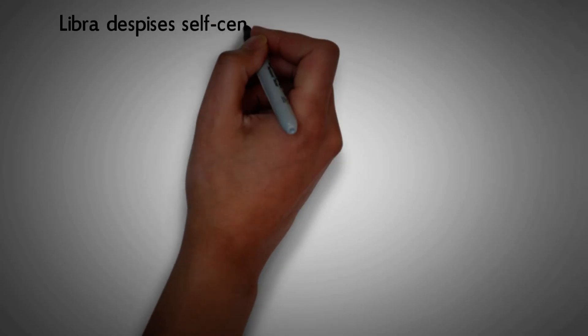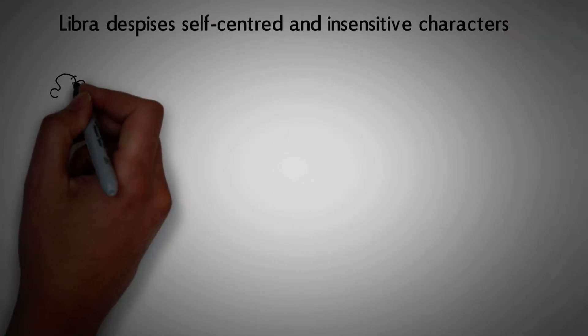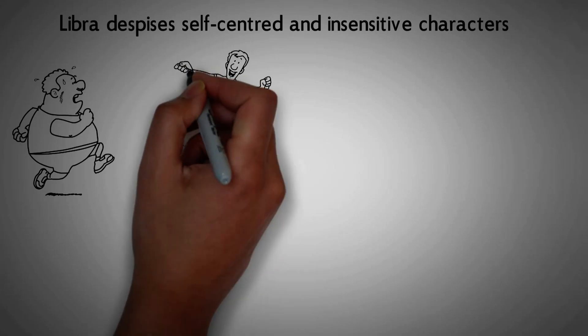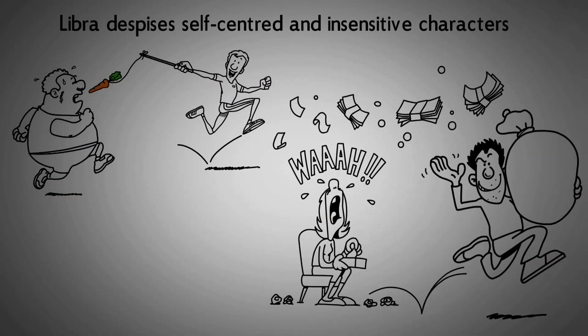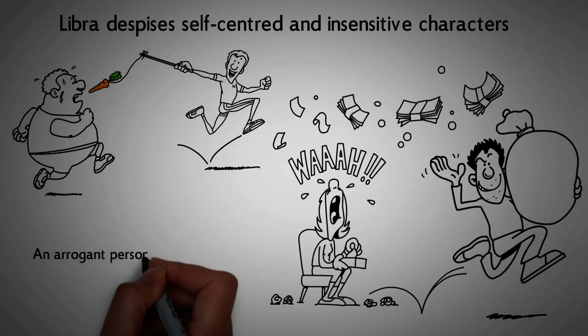Number 8. Libra despises self-centered and insensitive characters. Libra hates selfish and insensitive people. They despise inconsiderate people who focus on maximizing their happiness at the expense of others. An arrogant person is a turn-off to Libra.